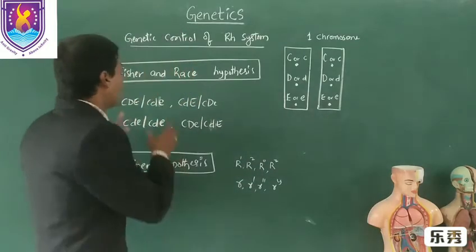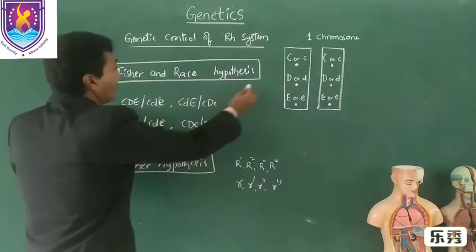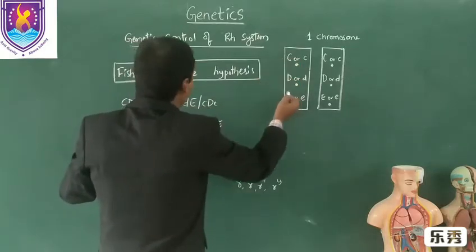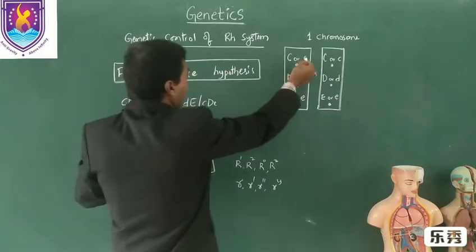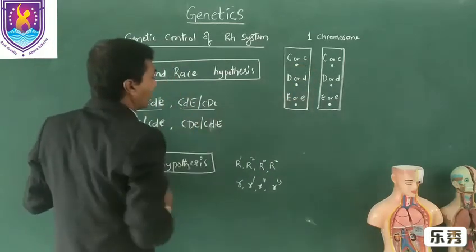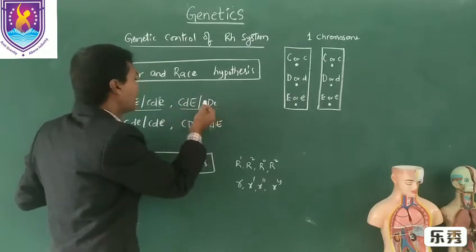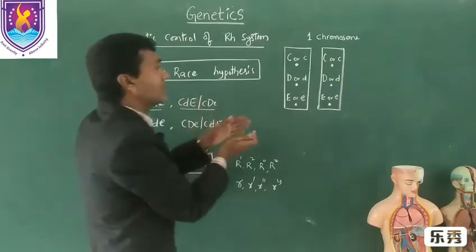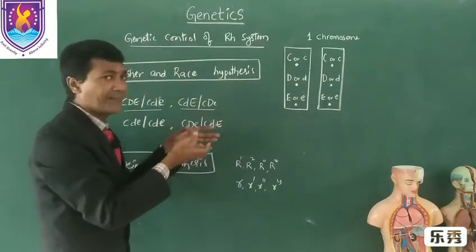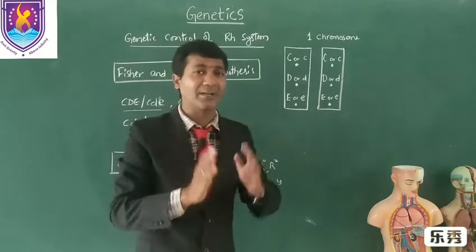According to Fischer and Race, the possible genotypic expressions are: there may be capital Cde or there may be small c, small d, small e. This is a possibility, and another possibility is capital C, small d, small e, or capital C, capital D, small e. These are various examples of possibilities of these three alleles in a particular organism, in a particular human being.